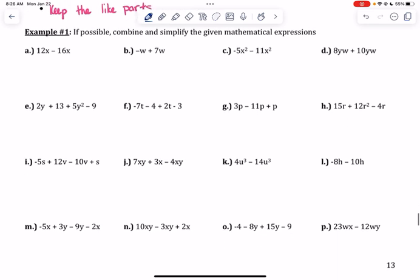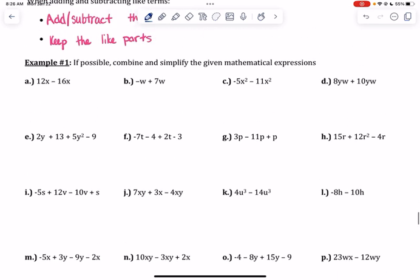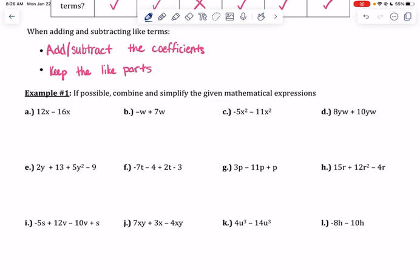We're going to try to simplify these examples here on the bottom of the page. If possible, combine and simplify the given mathematical expressions. Just keep in mind that when you add and subtract like terms together, you only add or subtract the coefficients or the numbers. You just keep the like parts that tell you what you can and can't add.